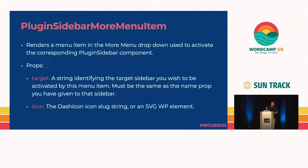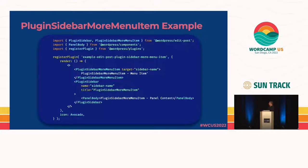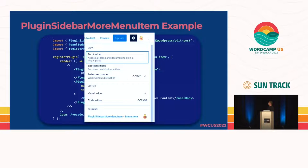There's PluginSidebarMoreMenuItem. This only works with the PluginSidebar slot — you get one when you register a PluginSidebar. What it does is add a button to the more menu dropdown that opens up a sidebar. It has two props: target, which is the name of the PluginSidebar you want to open, and an icon. In this example I'm doing both — adding the PluginSidebar with a name and then adding the button that targets the same name. Clicking it expands the sidebar.